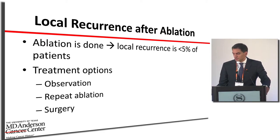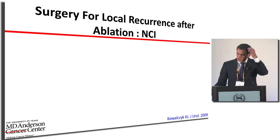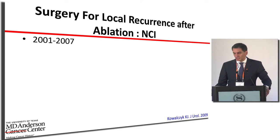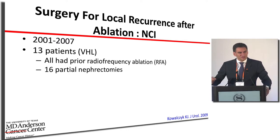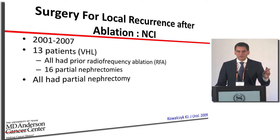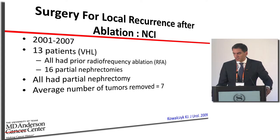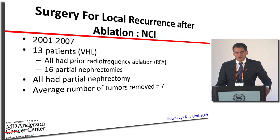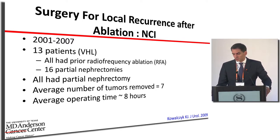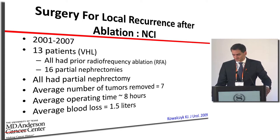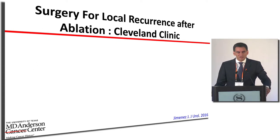Data from the National Cancer Institute, which has great experience with aggressive tumors such as VHL, shows only 13 patients were treated — all had a partial nephrectomy after failure of ablation. Multiple tumors were removed, typical for VHL patients. Surgery was about eight hours with a reasonably high blood loss.